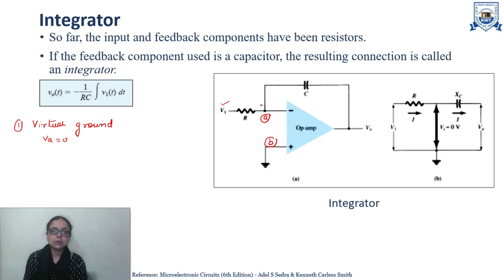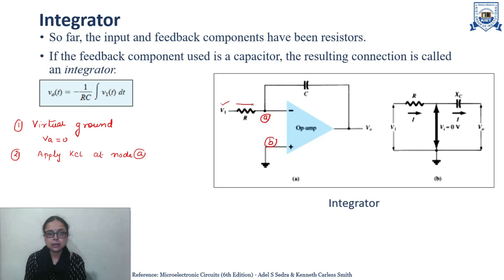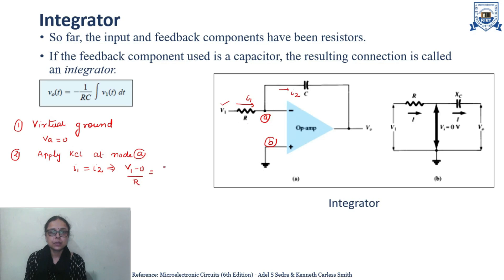Now the second step: we will apply KCL at node A. Applying KCL at node A — let us say this is current I1 and this is current I2. So at node A, I1 will equal I2. In terms of voltage, I1 can be written as V1 minus 0 divided by R, and this equals 0 minus V0 divided by Xc, which is the impedance of the capacitor.